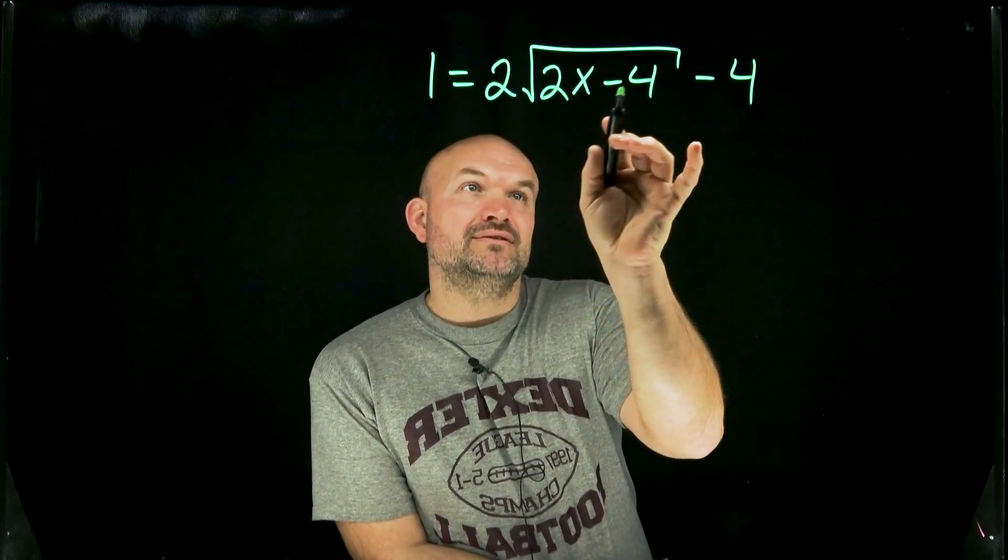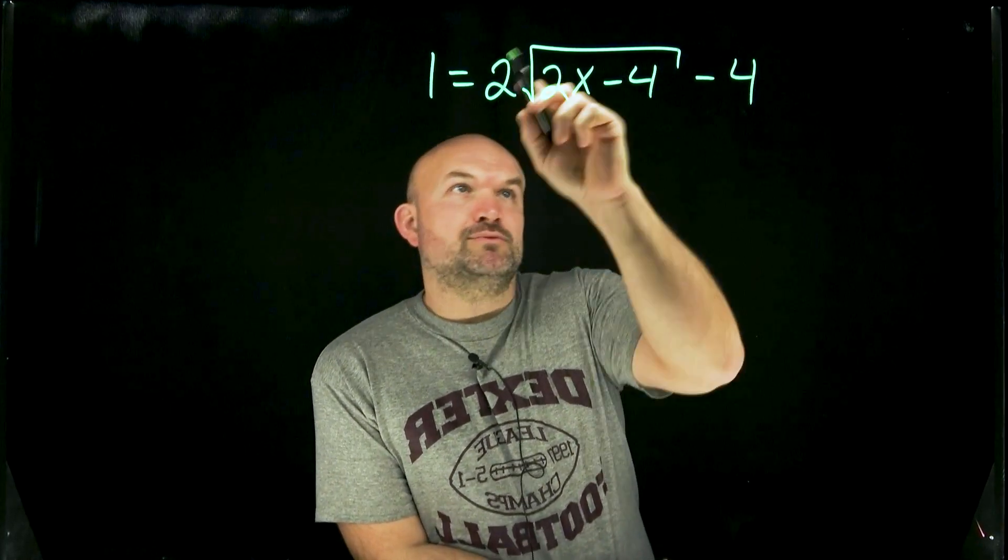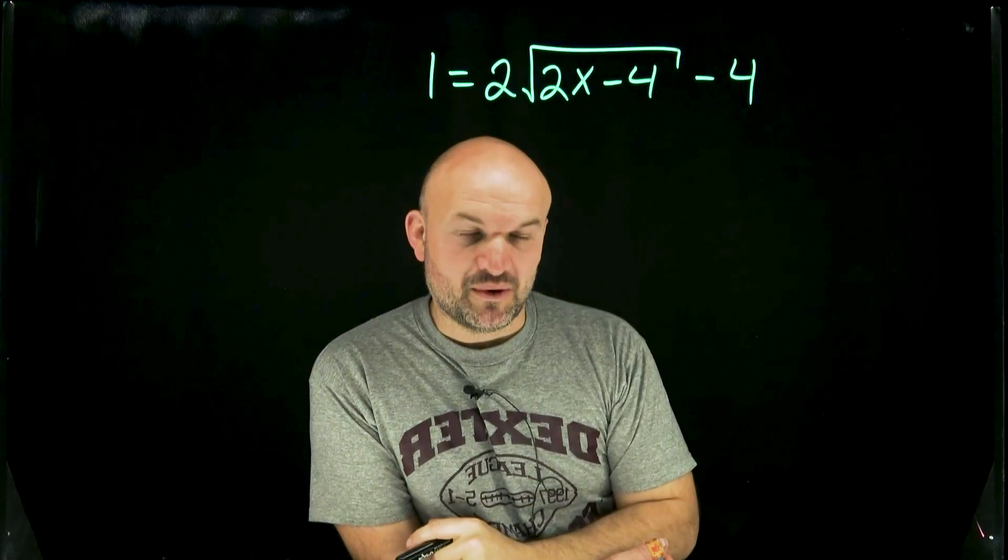We have it multiplied by 2 here, subtracted by 4 here, and then we have the square root of it, then it's being multiplied by 2, and then it's being subtracted by 4.